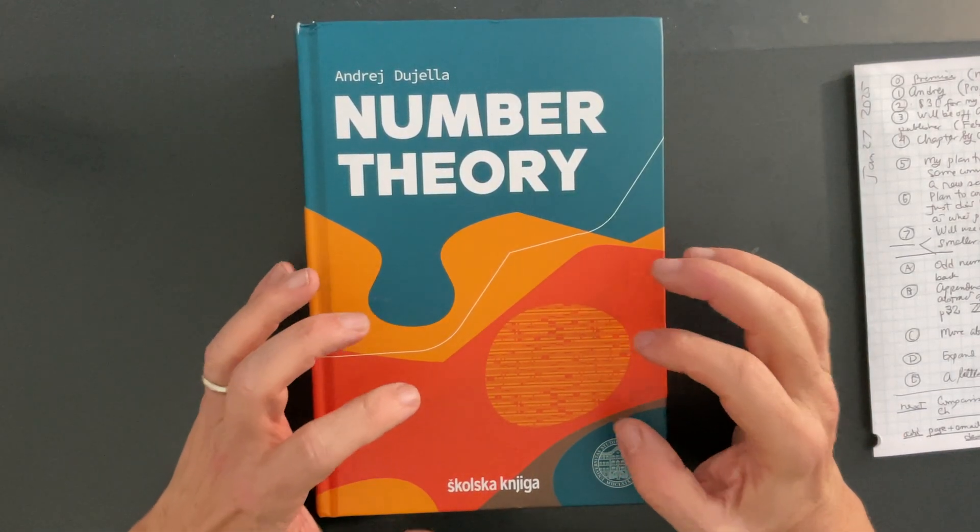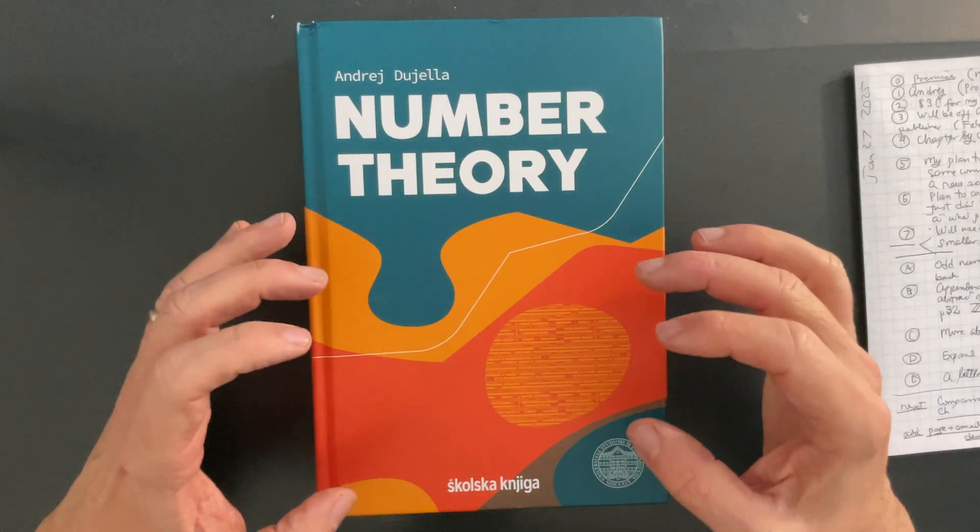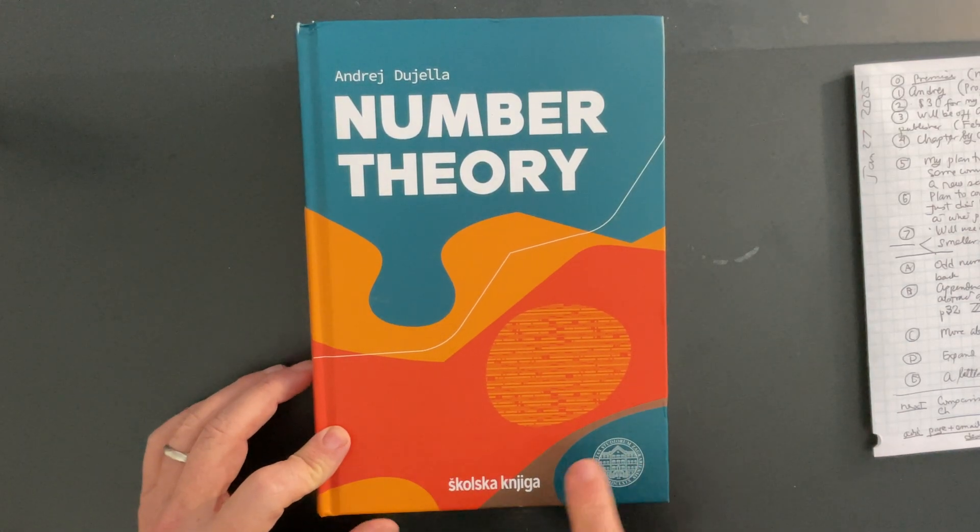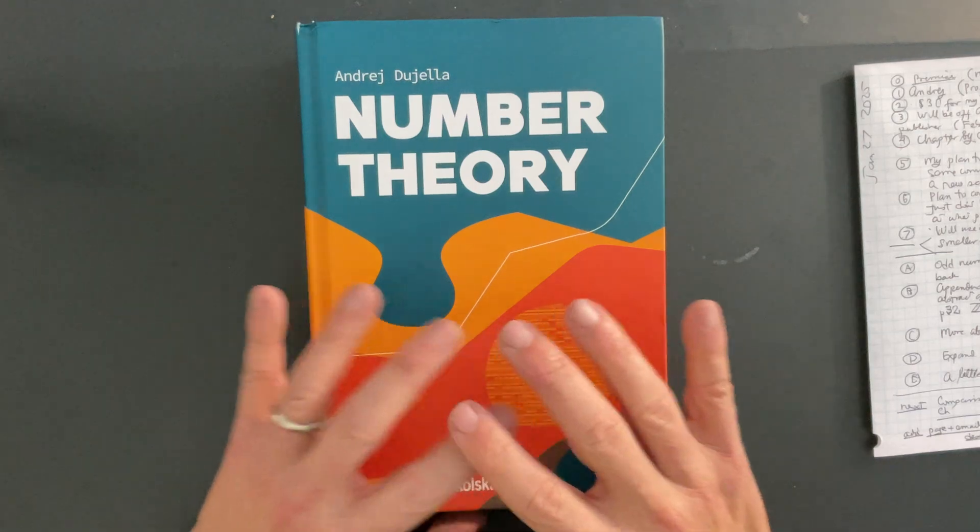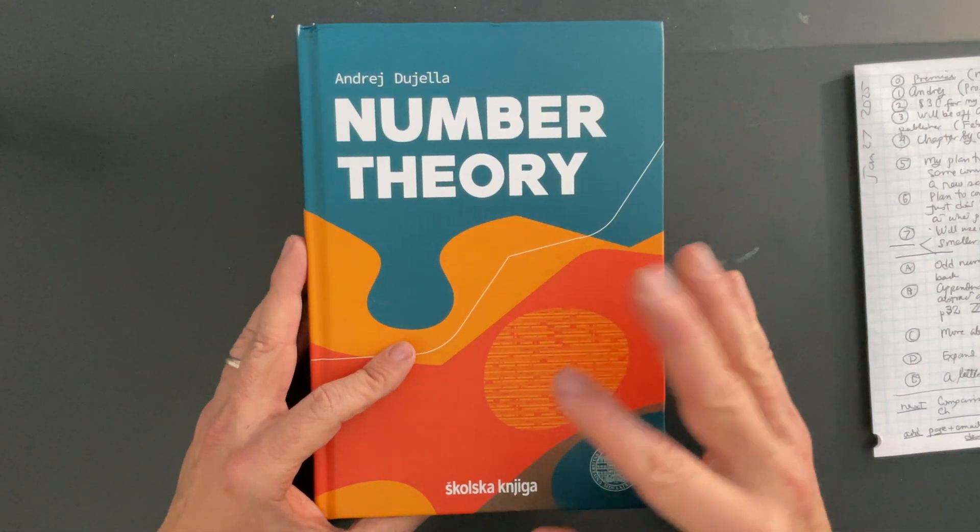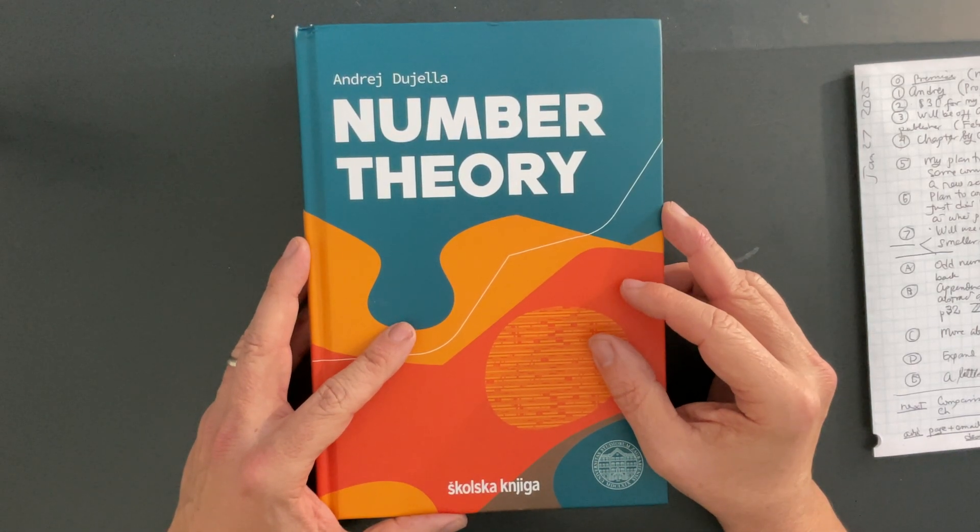This book was originally published in Croatia, and then this is the English edition of it. It's by a publishing house in Croatia. This is going to be an early look at the book. I plan to use this book for my number theory assessment.